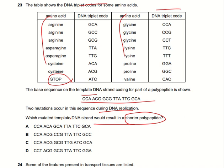We need to check all the options and find which codon among these sequences codes for the stop codon, producing the shorter polypeptide. We find that the stop codon is ATC. Checking all options, ATC is present in option C. The remaining sequence is the same, but since ATC is present there, polypeptide production will stop, resulting in a shorter polypeptide. So option C is the right answer.